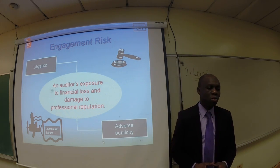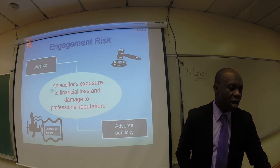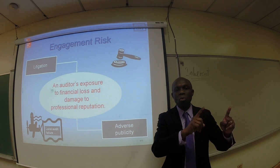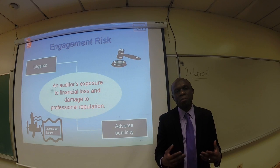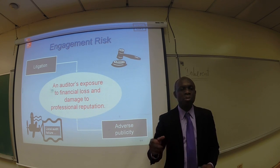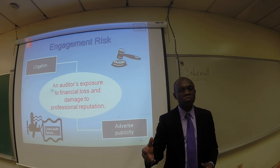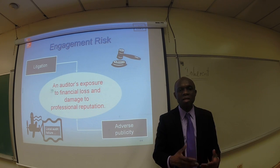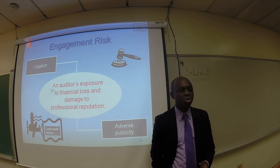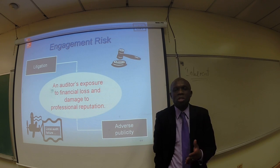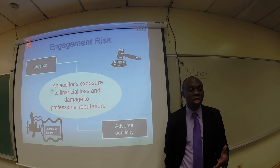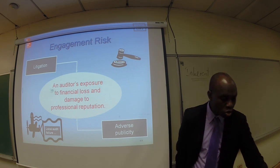Let's take a look at engagement risk and how it is connected to audit risk. When an auditor expresses an opinion on financial statements that are materially misstated, the auditor has not effectively done his job. The potential ramification is that somebody might rely on those financial statements and make decisions based on them. If it is eventually uncovered that the audit was not properly done, the auditor is exposed. The consequence of audit risk is engagement risk — meaning the auditor might be exposed to financial loss and damage to professional reputation, and you might wind up with a lot of litigation.